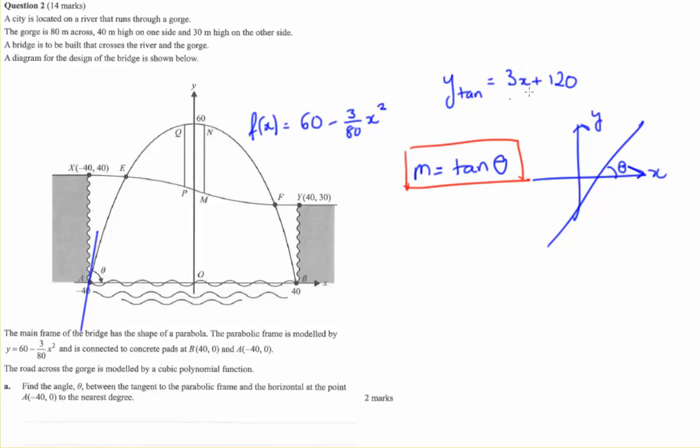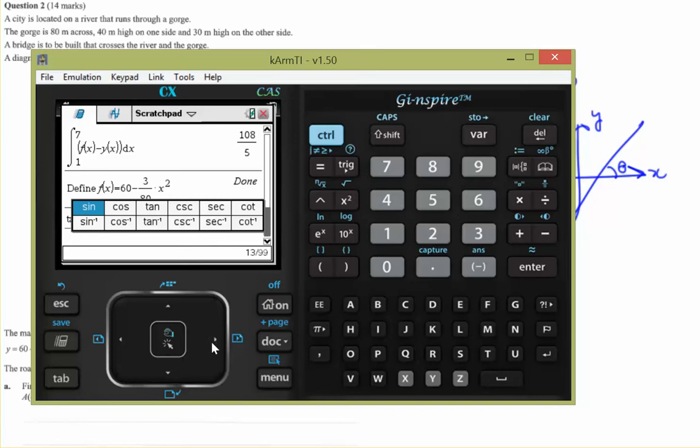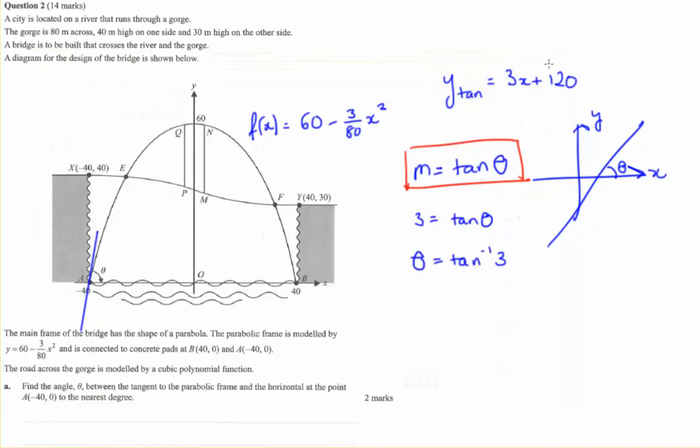Let's solve for theta. Theta equals inverse tan of 3. If you're good students, you'll leave your calculator in radians. When you grab your tan function, you'll get an answer in radians, which you'll need to convert to degrees.